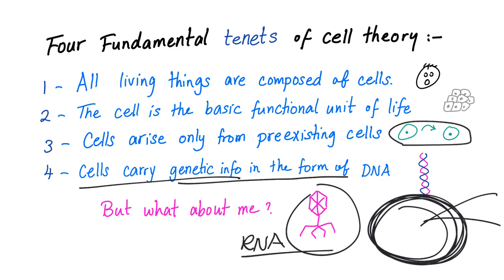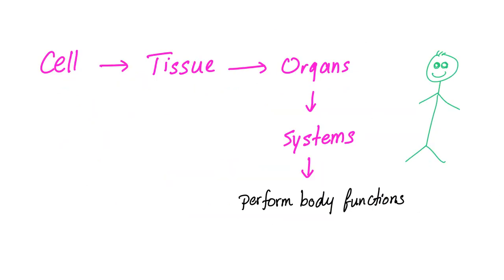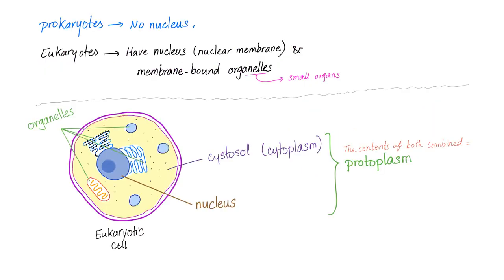As you know from elementary school, a group of cells forms tissues, a group of tissues forms organs, and a group of organs forms systems, and these systems perform different body functions. Inside our cells we have organelles, or small organs, such as mitochondria, lysosome, peroxisome, Golgi, and endoplasmic reticulum. Here is the cytosol or cytoplasm, here is the nucleus, and together these are called protoplasm.